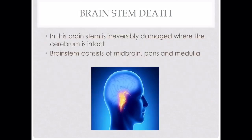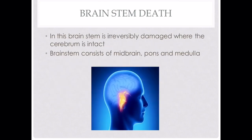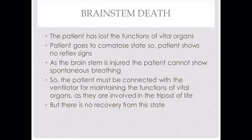Brain stem death is the second type. In this state, the brain stem is irreversibly damaged while the cerebrum is intact. The brain stem consists of the midbrain, pons, and medulla. The patient has lost the function of vital organs and goes into a comatose state, showing no reflex signs. As the brain stem is injured and the medulla plays a major role in respiration, the patient shows no spontaneous breathing and must be connected to a ventilator to maintain the functions of vital organs, which are part of the tripod of life.